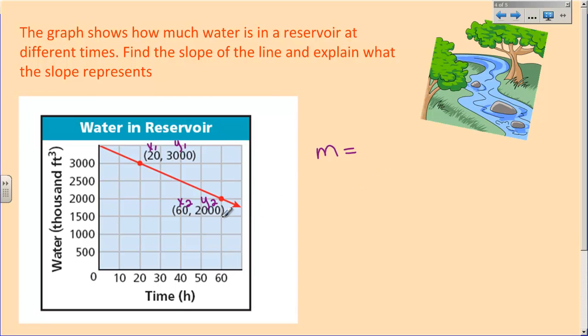So for my slope here, Y2 is 2,000, and Y1 is 3,000. X2 is 60, X1 is 20. And so 2,000 minus 3,000 is going to be negative 1,000. And 60 minus 20 is 40. Well, this will simplify. I can cross off a 0, but I still have negative 100 over 4, which hopefully you know by dividing is the same thing as negative 25. 4 times 25 is make 100. So my slope is negative 25 over 1. It's negative because my line is decreasing.